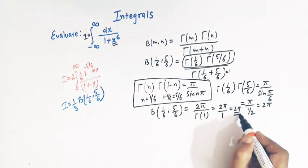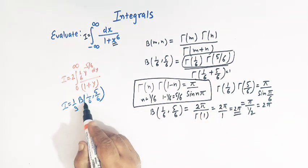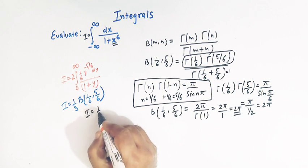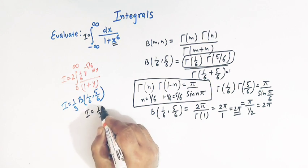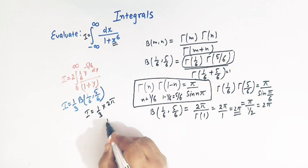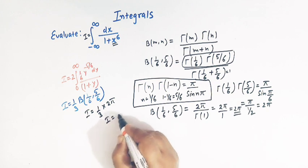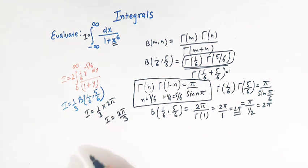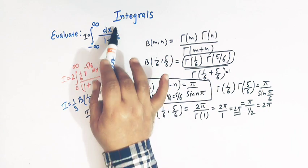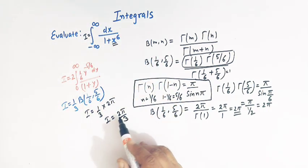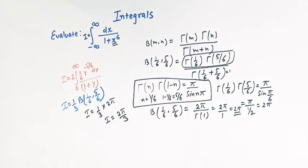Taking this value into the expression, I is equal to 1 over 3 times 2 pi, which equals 2 pi over 3. So the value of this integral is 2 pi over 3.